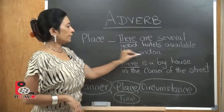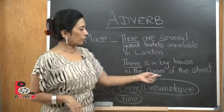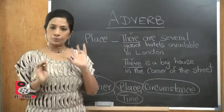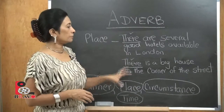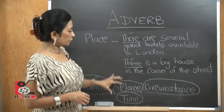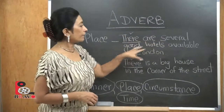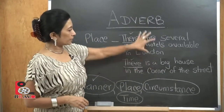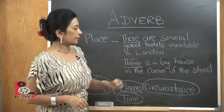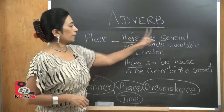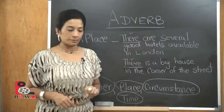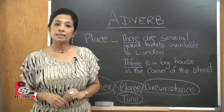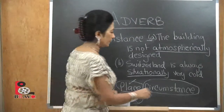The second example is place. 'There are several good hotels available in London.' 'There is a big house in the corner of the street.' Here the adverb is 'there' — it does not finish with '-ly'. 'There' is used prominently to indicate place: the hotels are there, the house is there. So 'there' is the adverb of place in these sentences.